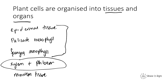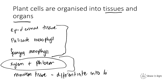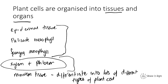We'll look at most of these when we look at the leaf, but the meristem tissue is found in the growing tips of shoots and roots and is able to differentiate. Differentiate means turning an unspecialized cell — a stem cell — into a specialized cell, into lots of different types of plant cell. So the meristem tissue is a region where cells can differentiate into lots of different types of plant cells.